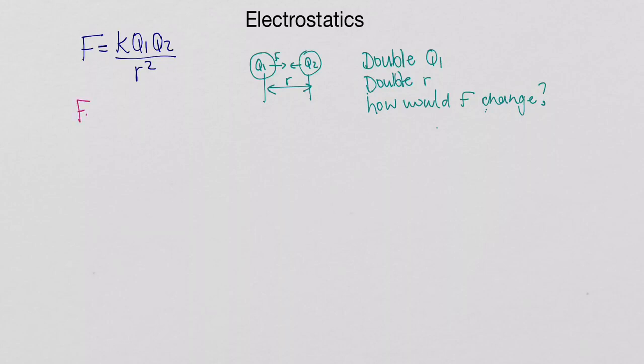Let's say that my F original, my original force is k Q1 Q2 over r squared. What change did we make here? So let's say my new force is going to be k, and then instead of Q1, we doubled it, so it would be 2 multiplied by Q1. We didn't change Q2, and what did we do to the distance r? We doubled it. So instead of r, it is 2r and then squared. Now you multiply everything out, and you take your numbers to the left. So we would have 2 k Q1 Q2 over 4r squared.